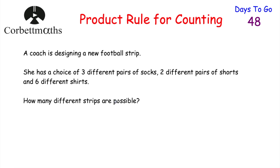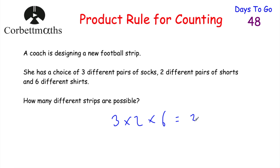To find how many different strips are possible, we just need to take the number of possible options for the socks, the shorts, and the shirts, and find the product — multiply them together. So we do 3 × 2 × 6, which gives us 6 × 6 = 36. So there are 36 different possible strips.